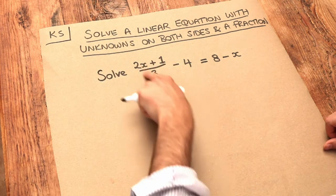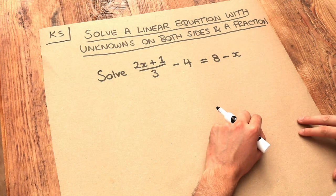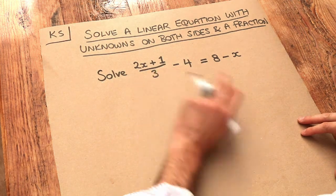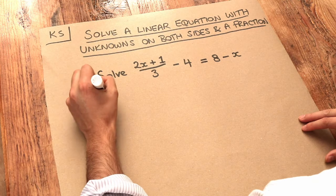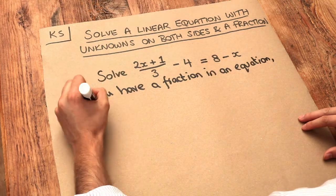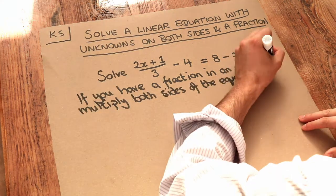The way we can get rid of this fraction is to just multiply through by whatever the denominator is. So let me just write that down. If you have a fraction in an equation, multiply both sides of the equation by the fraction's denominator.